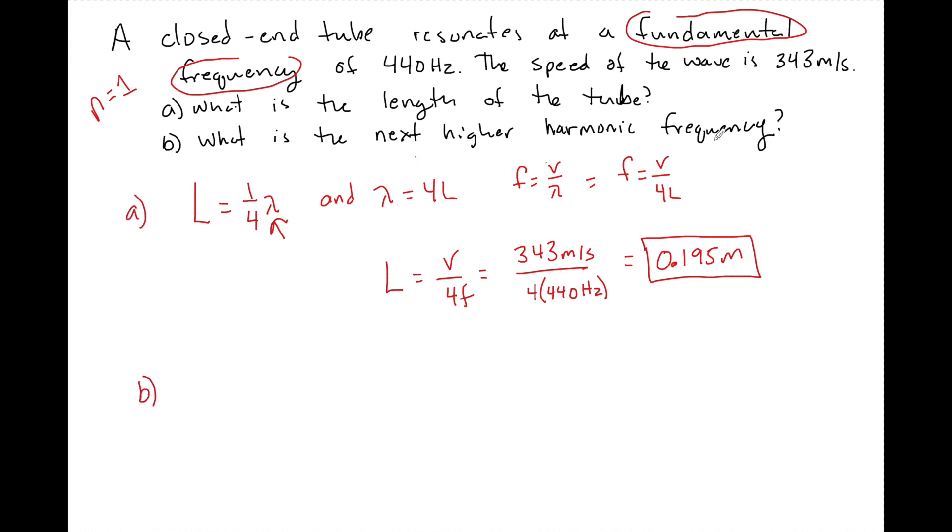Now for part B, the next higher harmonic frequency. If we are currently at N equals 1, we have to figure out what the next harmonic frequency is. For closed N tubes, Ns only go up by odd numbers. So we cannot have N equals 2. It has to go by an odd number, N equals 3. Therefore, the next harmonic frequency is 3 times 440 hertz, which is 1320 hertz.